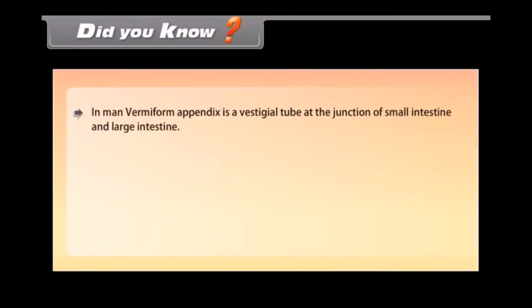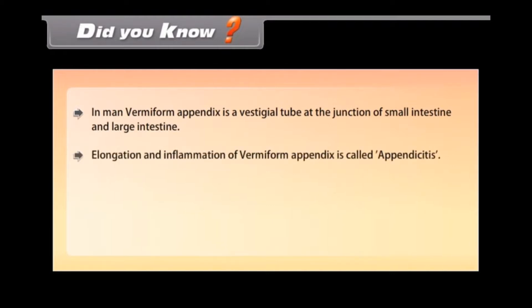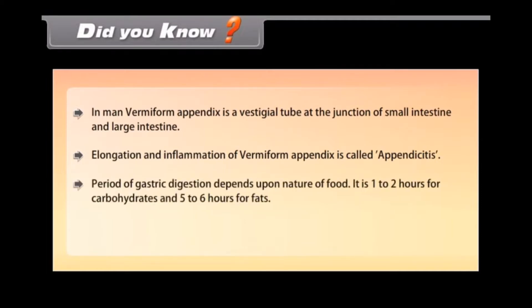Did you know? In man, the vermiform appendix is a vestigial tube at the junction of the small intestine and large intestine. Elongation and inflammation of the vermiform appendix is called appendicitis. The period of gastric digestion depends upon the nature of food — it is 1 to 2 hours for carbohydrates and 5 to 6 hours for fats.